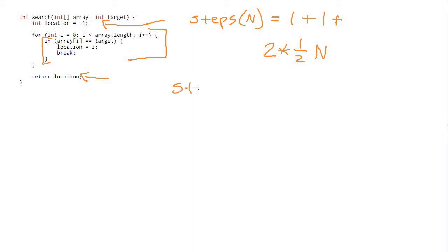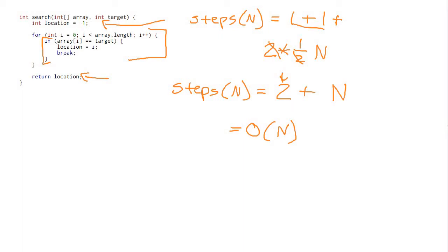So we can simplify: steps(n) = 2 + n, because the 2 (loop body) and the divide-by-2 (half iterations) cancel out, leaving 2 + n. We ignore the constant added on and get big O of n. This is why the break didn't matter for worst case vs. average case — worst case gives 2 + 2n, average gives 2 + n, but both simplify to big O of n. Whether we break halfway through or go all the way through, the analysis is big O of n either way.